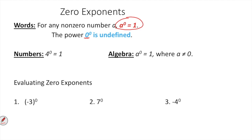So, in numbers, you have four to the zero, that's equal to one. Algebra, a to the zero, that's also equal to one. We'll talk about some things here, a couple of examples.